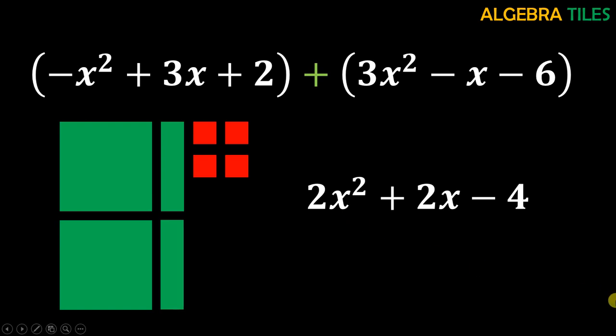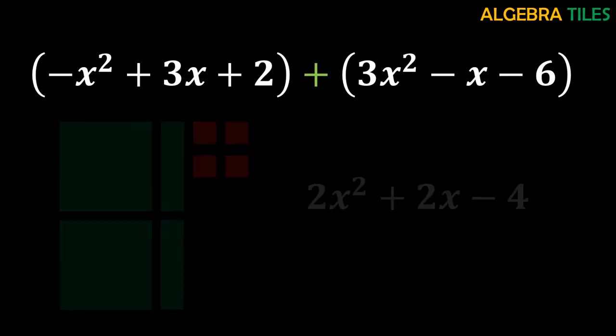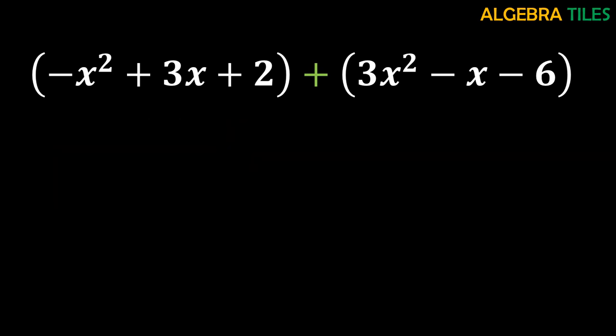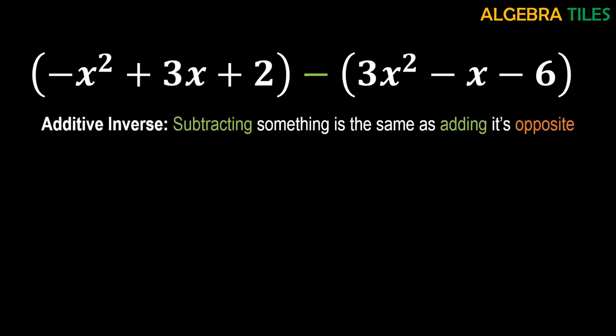In the last part of this video I am going to discuss subtraction using algebra tiles. We will use a polynomial we have already modeled so it is easy to follow. For subtraction using algebra tiles, we use the technique of additive inverse: subtracting something is the same as adding its opposite. If you want to subtract something, it is exactly the same as adding its opposite. This concept is used with integers, and we apply the same idea here.